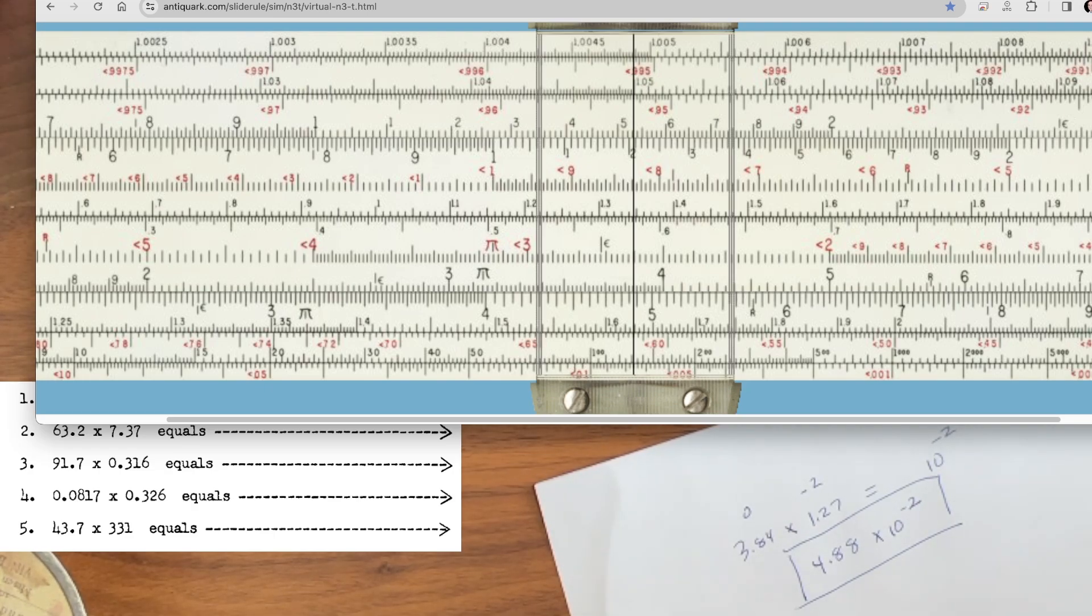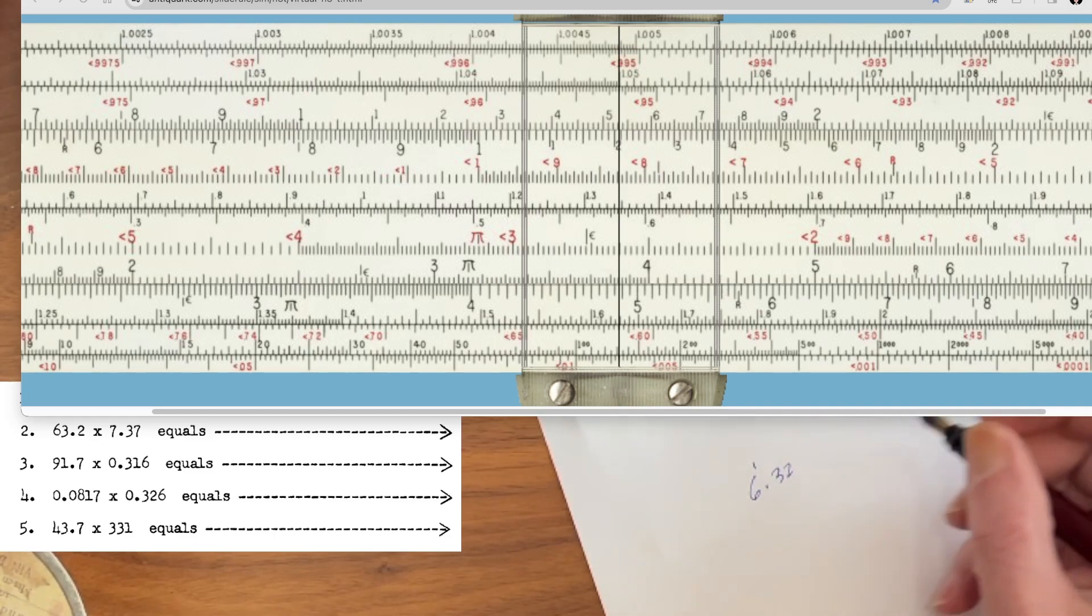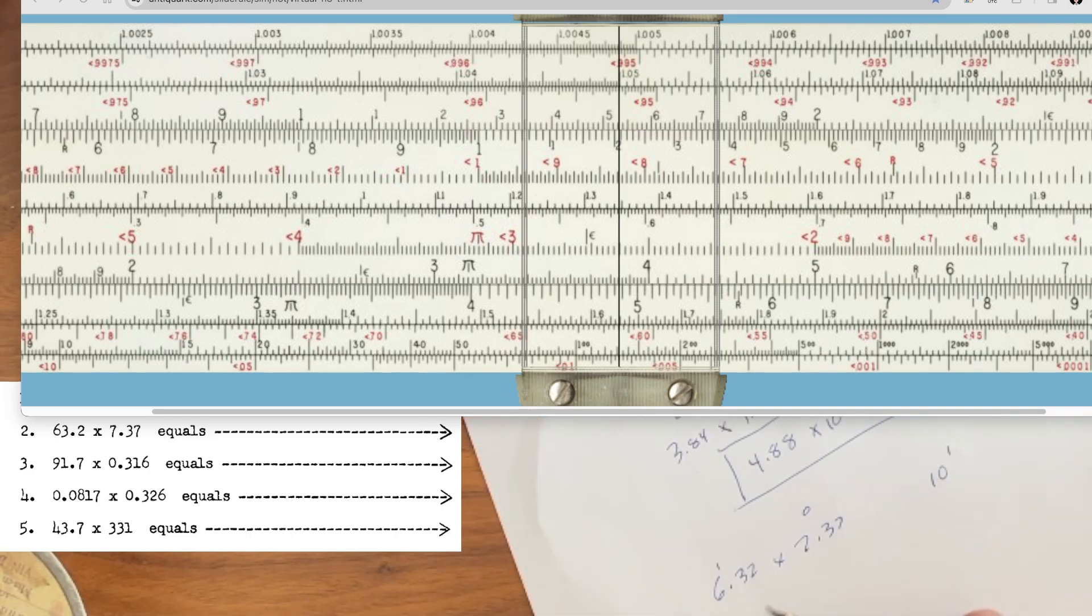Now let's go on to the next one. Now here we have 6.32 times 10 to the 1 times 7.37 times 10 to the 0. So our initial thought would be 1 plus 0, our answer is going to be 10 to the 1. But look at the numbers, the character here. So we have 6 times 7, that's going to be 42. And 42 times 10 to the 1 is not scientific notation. We have to make it 4.2 times 10 to the 2. So our answer is going to be 10 to the 2.